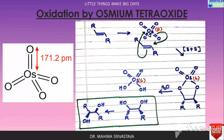Osmium tetraoxide is colorless and has a chlorine-like odor. You can also see the structure of osmium tetraoxide shown here. Many samples become yellow because of contamination by yellow-brown osmium dioxide. Osmium tetraoxide is a tetrahedral and non-planar compound. It is soluble in water and sublimes at room temperature.